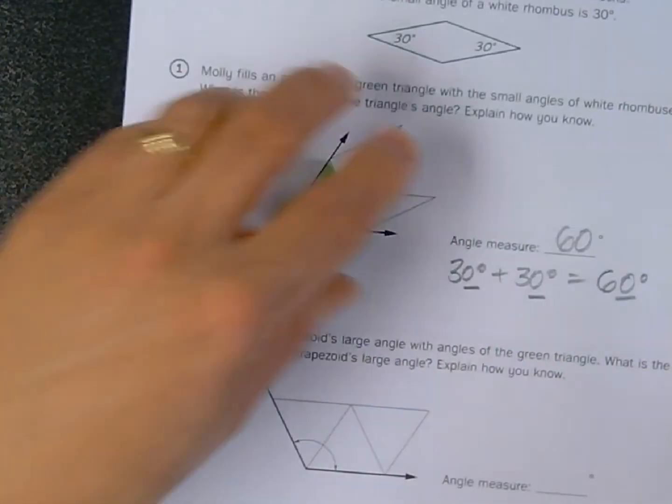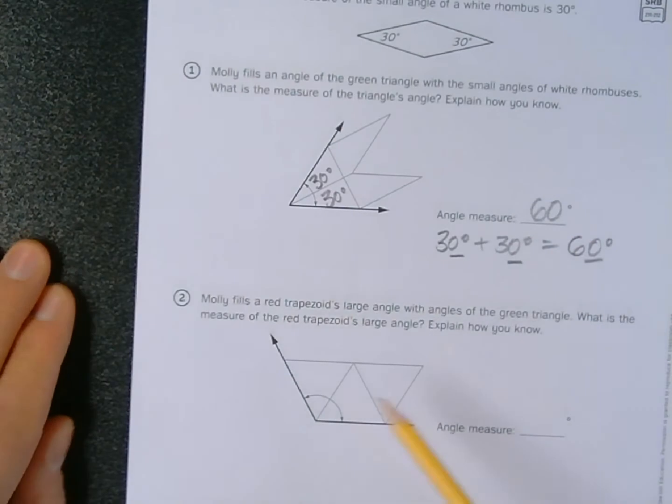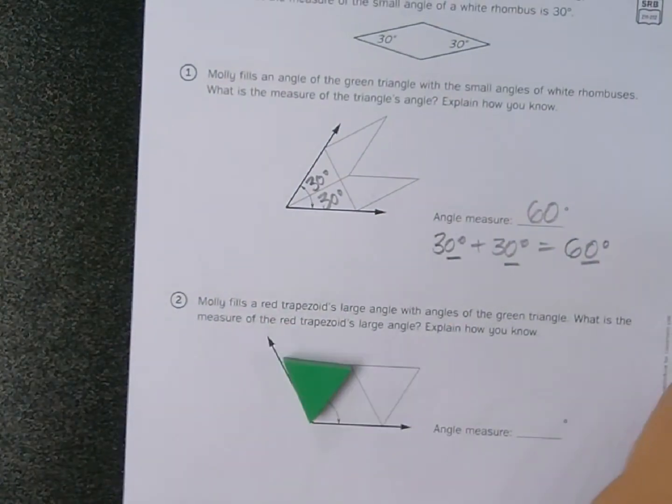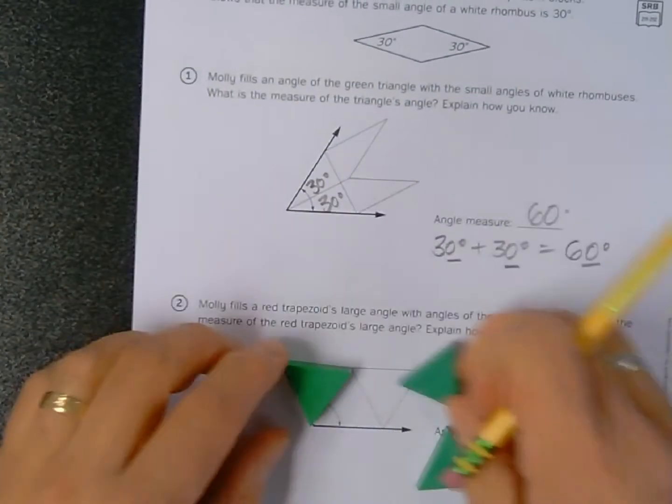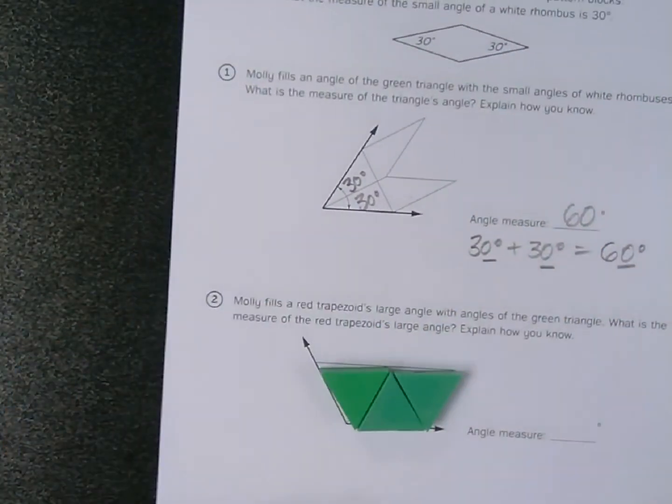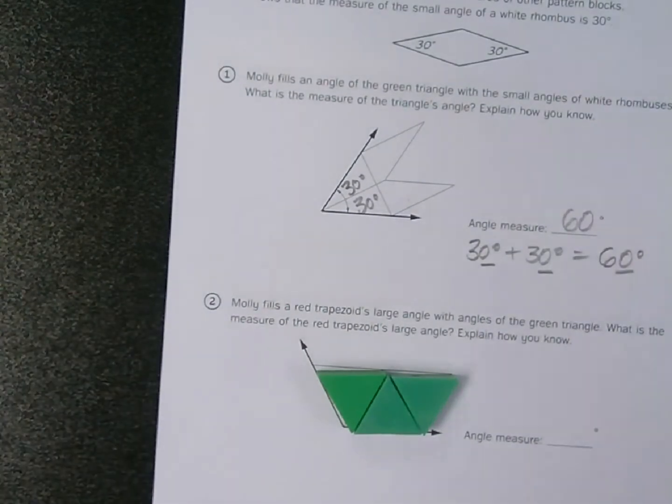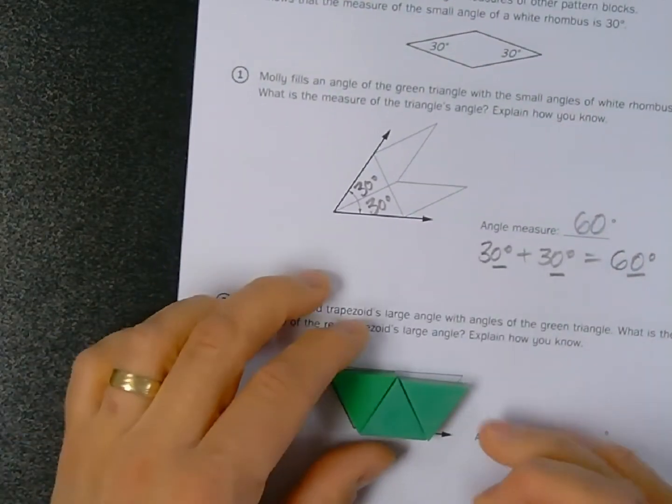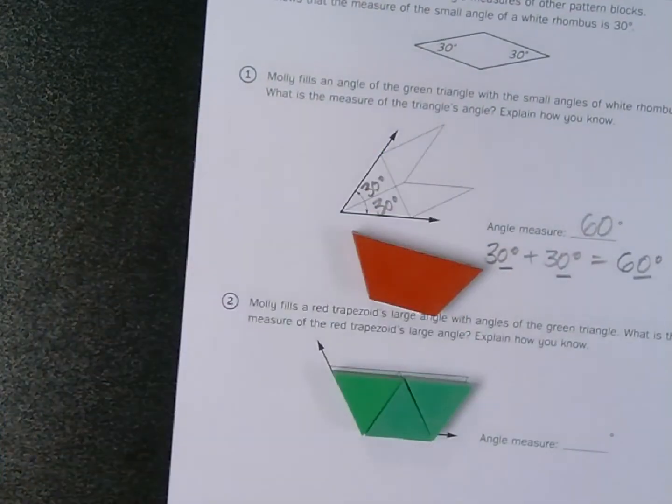When I look at problem number two, where we've moved from the rhombus to the triangles, I know that I'm looking at angles that are 60 degrees. Molly fills the red trapezoid's large angle with angles of the green triangles. I have constructed a trapezoid from those three green triangles.